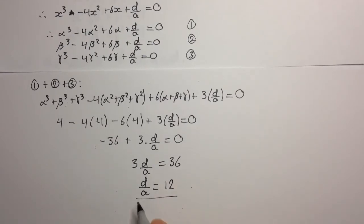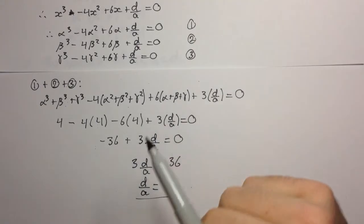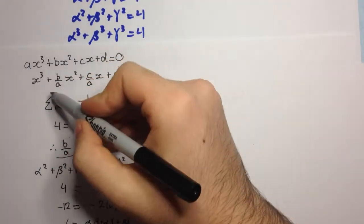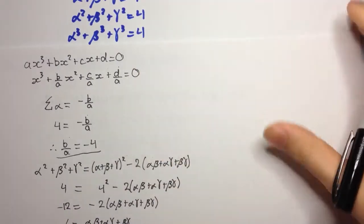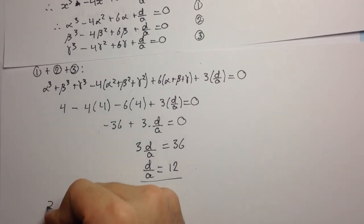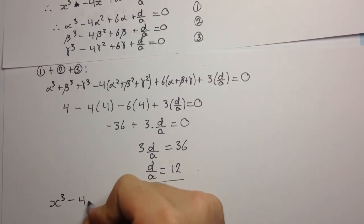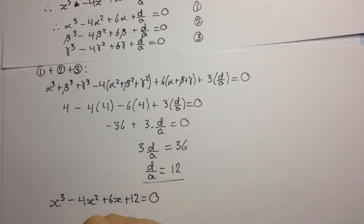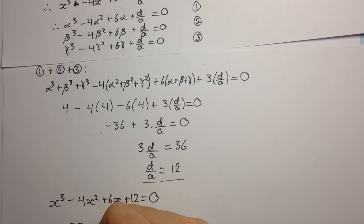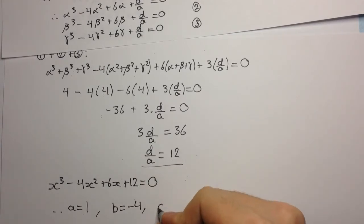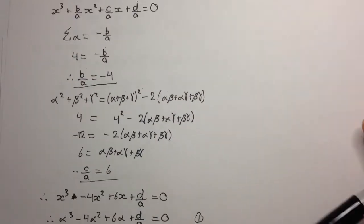Now we have d on a, c on a, and b on a, and we can substitute back into our polynomial. That's why we divided by a — so we could obtain b on a, c on a, and d on a using this method. Substituting back in, we get x cubed minus 4x squared plus 6x plus 12 equals 0. Therefore a equals 1, b equals minus 4, c equals 6, and d equals 12. And that's your final answer. Hope you enjoyed the video, thank you.